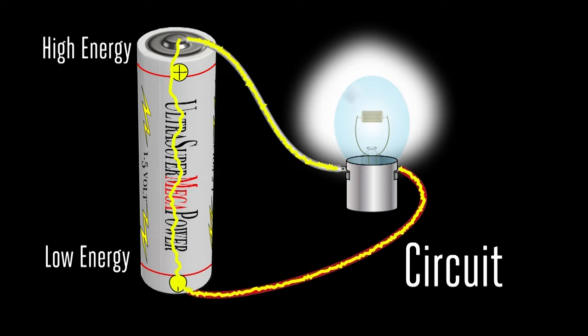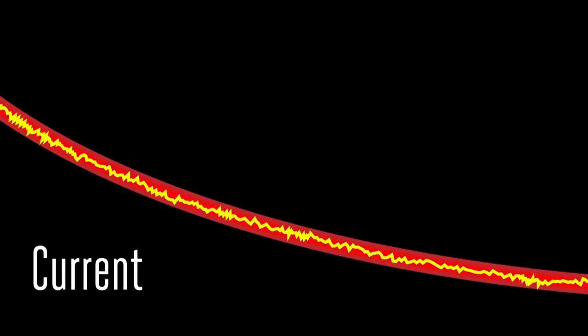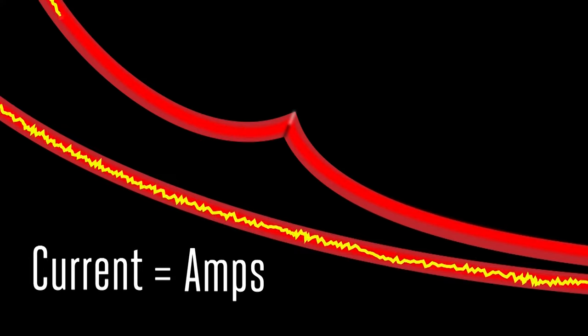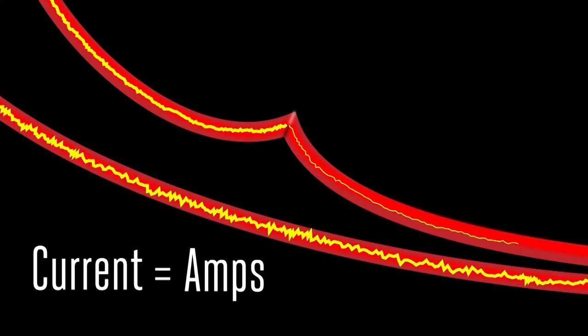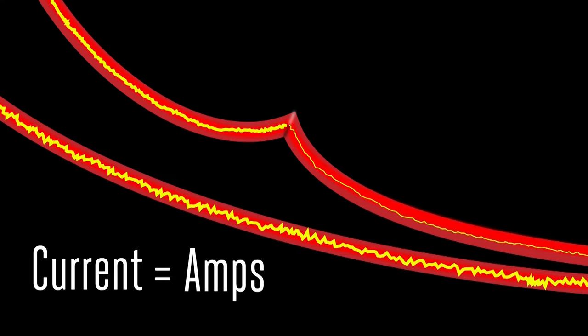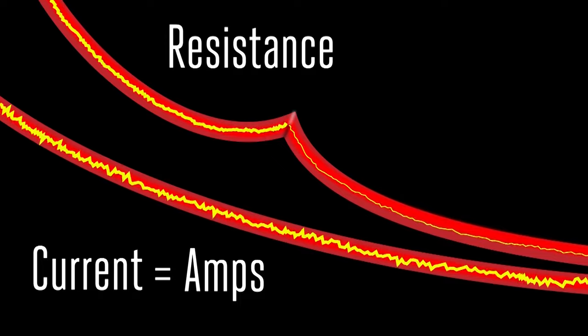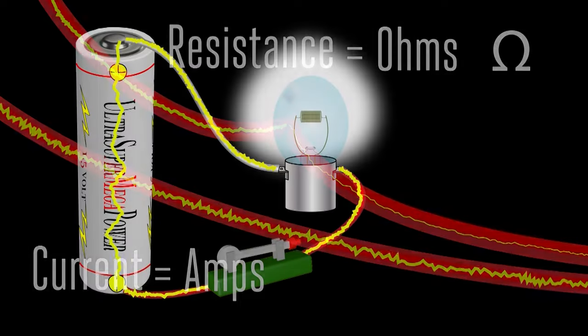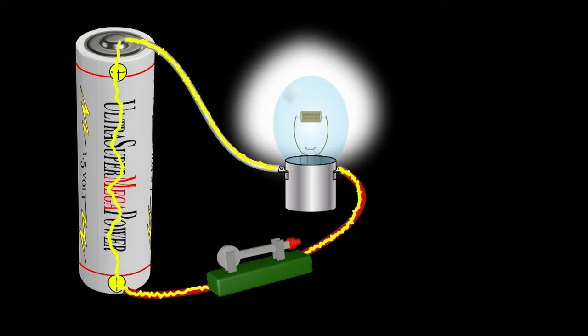Electricity always and only travels in circuits. When it's traveling through a circuit, electricity is called current and it's measured in amps. When there's something like a kink in the wire that reduces that current, the amount of that reduction is called resistance and is measured in ohms. And finally, when electricity is used to power something like a motor or a light, it's measured in watts.